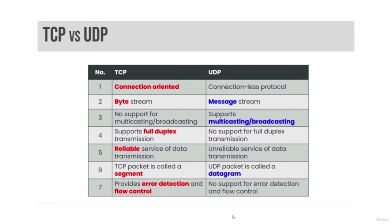UDP is a simpler and faster cousin to TCP. UDP is commonly used for applications that are lossy or can handle some packet loss, such as streaming audio and video. It is also used for query response applications, such as DNS queries.